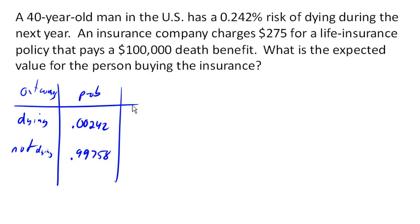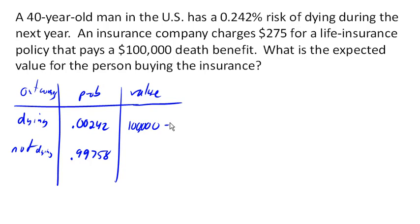Then we look at the value of each outcome. We're talking purely monetary values here, not emotional or life value. For the person buying the insurance and their family, the monetary value of dying is the $100,000 they receive minus the $275 they paid for the policy, giving a positive net benefit of $99,725. If they don't die, the financial value of the insurance is negative $275.